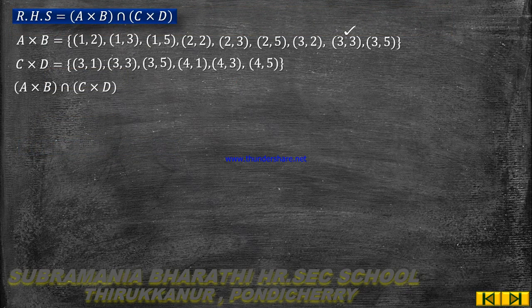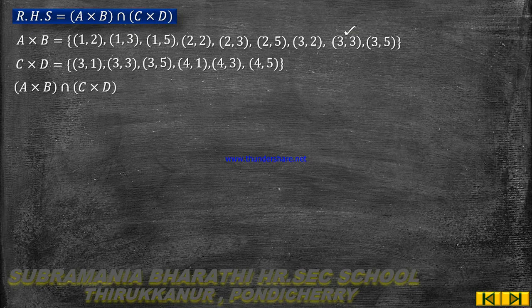Now the RHS equals (A×B) ∩ (C×D). A×B = {(1,2),(1,3),(1,5),(2,2),(2,3),(2,5),(3,2),(3,3),(3,5)}.